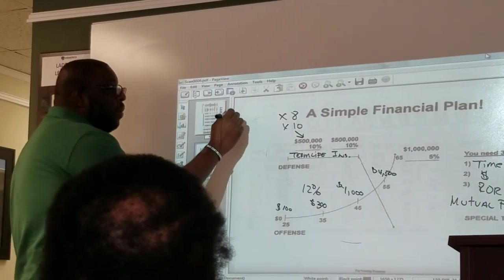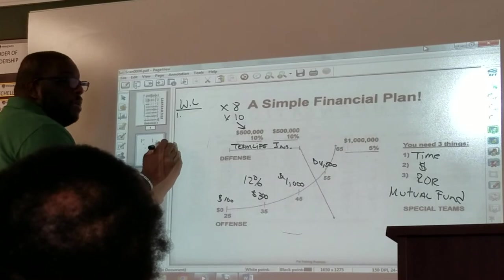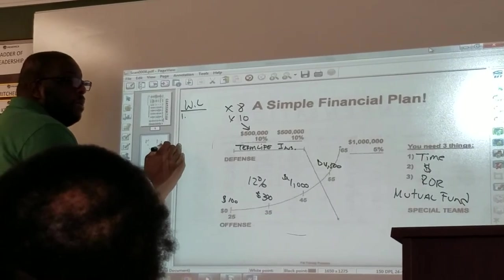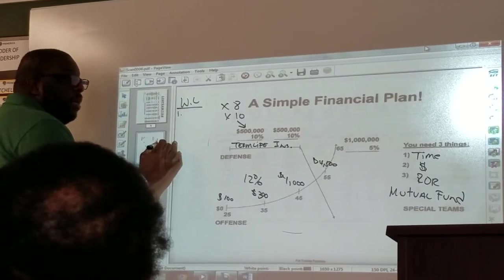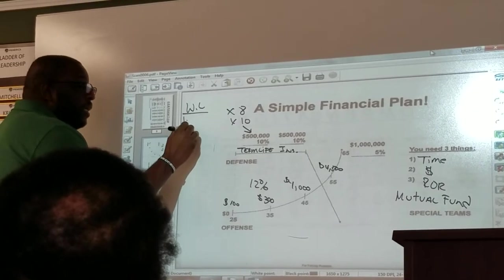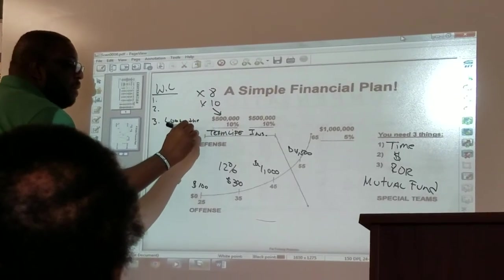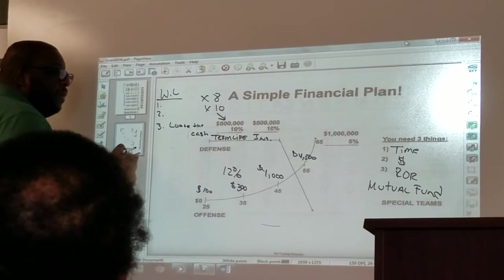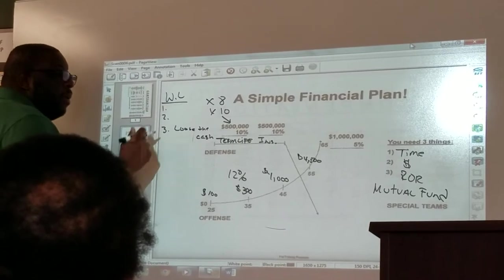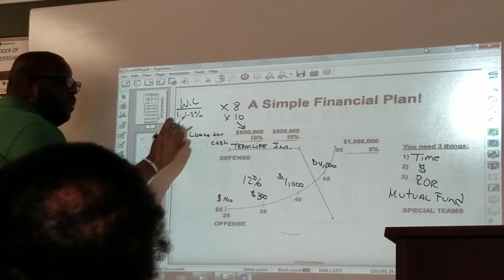Why don't you want whole life insurance? Three reasons. Pay for two and get one. You lose the cash. And I'm going to put that down here, you lose the cash. What's another reason why you don't want whole life? One to three percent on your money in the cash savings account. What's another reason?